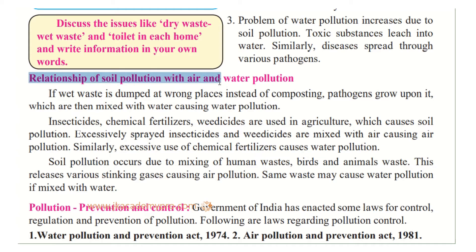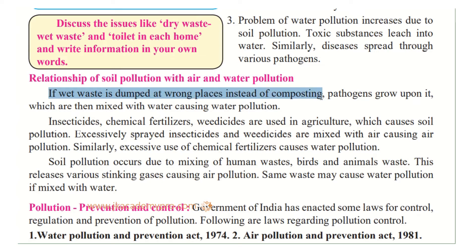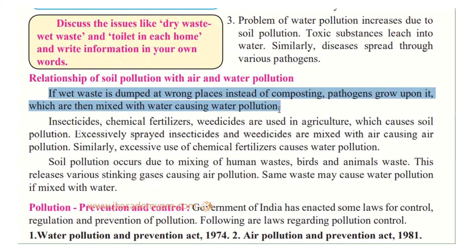What is the relationship of soil pollution with air and water pollution? If wet waste — waste generated in our homes such as toilet, bathroom, and kitchen waste — is dumped in wrong places instead of composting, pathogens grow upon it. This then mixes with water, causing water pollution. So water can be affected because of improperly disposed wet waste.